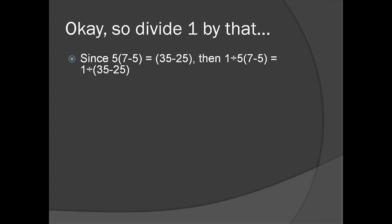So now we do what Presh tells us to do with PEMDAS, and we start with the parentheses. 1÷5(2) = 1÷10. Well, 1÷10 is easy. That's 0.1.